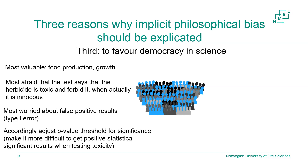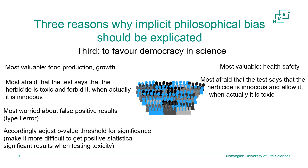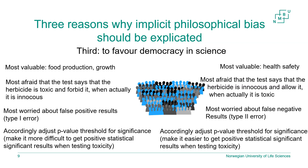Put this way, although the public doesn't understand the rest of the statistical test, they will understand that the basic value used to make this evaluation is food production and growth, and then the community can scrutinize it. An alternative argument could say: we think health and safety of the community is most valuable. So we are most afraid the test says the herbicide is innocuous and allows it when it is actually toxic, creating unknown health consequences. Therefore we are most worried about false negative results — type two errors — and accordingly adjust the p-value to make it easier to get positive significant results when testing toxicity.